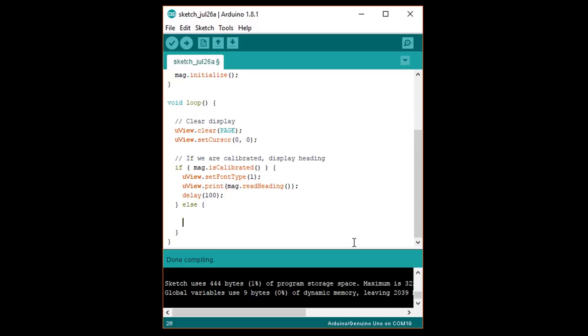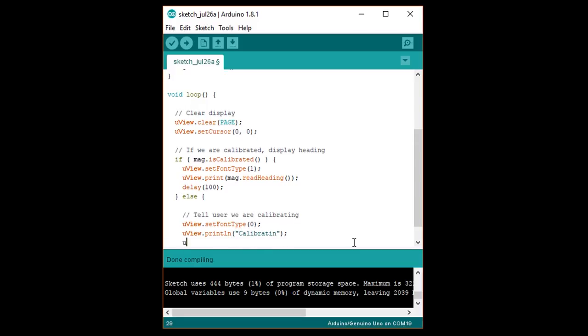Note that this only works for the xy axes on the board. We assume that z will always be pointing up if we're using the board to get a heading. So write slash slash tell user we are calibrating. uview dot set font type 0 uview dot println calibratin'. The g won't fit, so we'll pretend we're in the wild west. Then write uview dot println rotate me.